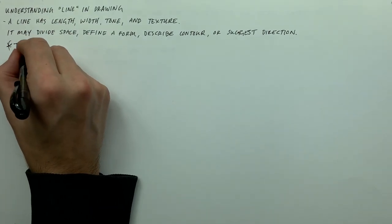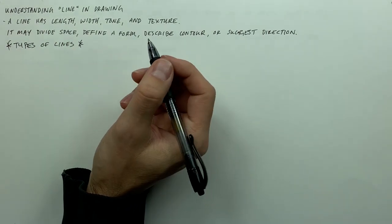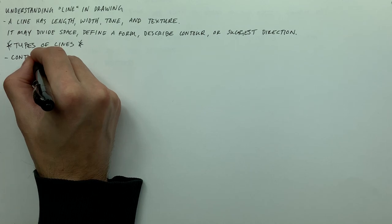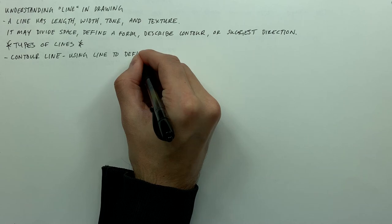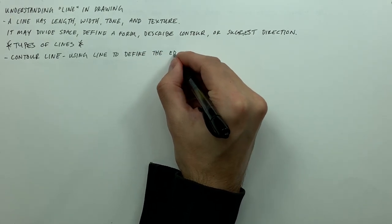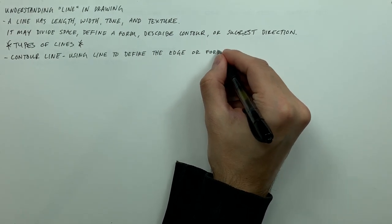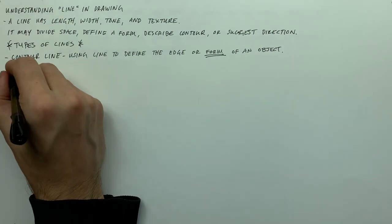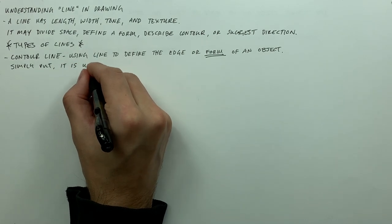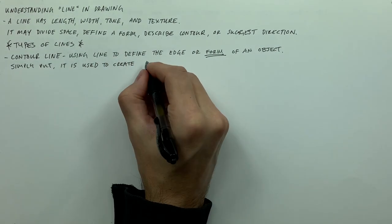Now there are different types of lines. So to start, the first line that you will be laying down in drawings is what's known as your contour line, and this is basically using line to define the edge or form of an object. Simply put, it is used to create an outline of your drawing.